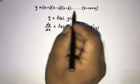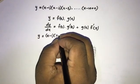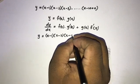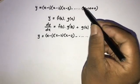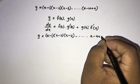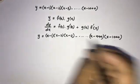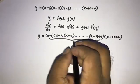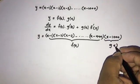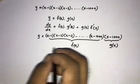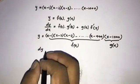Now we apply this product rule to our question. We have y equal to (x-1)(x-2)(x-3) and so on, up to the previous term (x-999) and the last term (x-1000). We take the first part as f(x) and the last term as g(x).